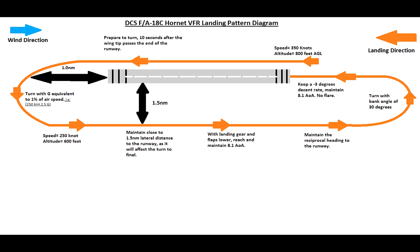You guys are going to have to forgive me — that's a crudely drawn diagram by myself. So the landing pattern starts with this: you'll enter the landing pattern with 250 knots and 800 feet above the ground. Once your wingtip passes the end of the runway after 10 seconds, or roughly 1 nautical mile from the end, you'll begin a turn with 1% G equivalent to your airspeed. So for example, if you're doing 250 knots, you'll pull a 2.5 G break turn, and then you'll end up on the downwind leg with 250 knots and 600 feet altitude above the ground.